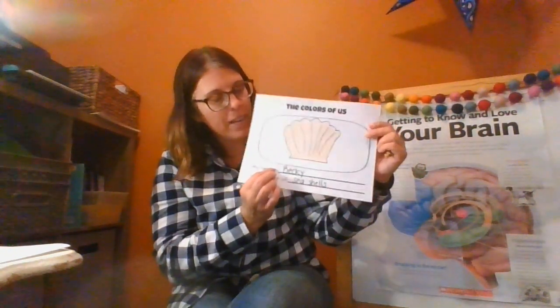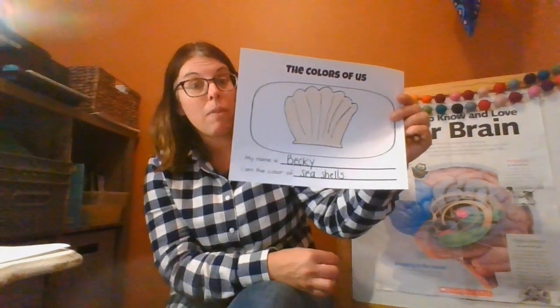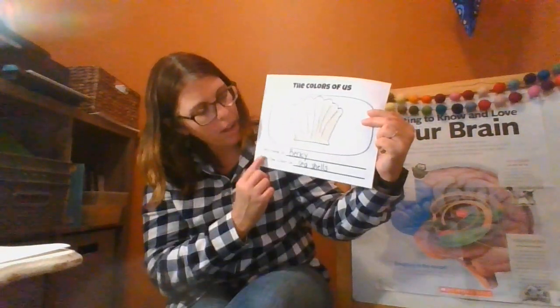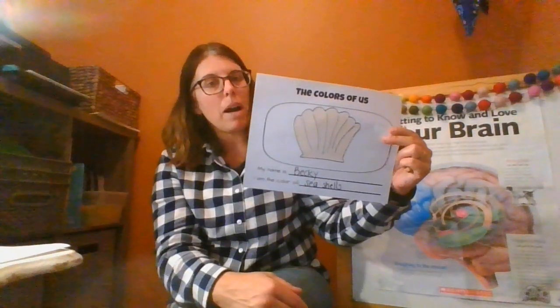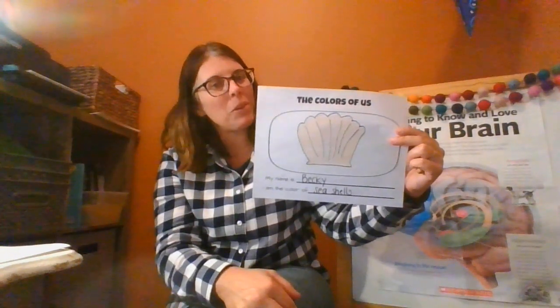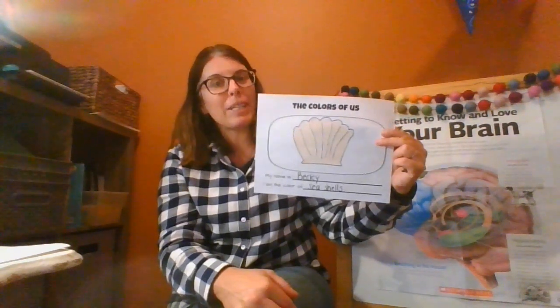My name is. So then the next thing to do is to fill this in. My name is, and write your name here. Draw your picture big, but it takes up almost the whole box. And then here comes the tricky part is coloring that picture in for the color that matches your skin.